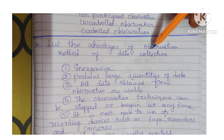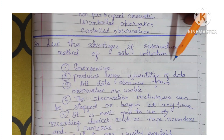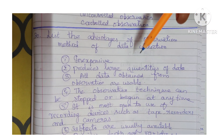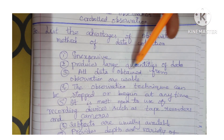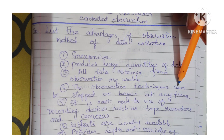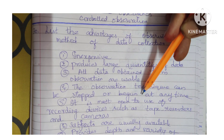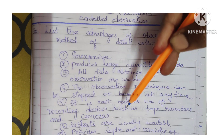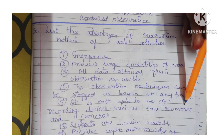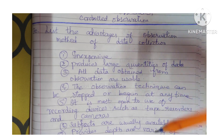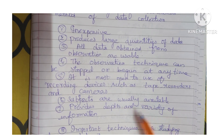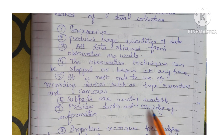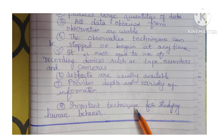Question 30: List the advantages of observation method of data collection. It is inexpensive and produces large quantities of data. All data obtained from observation are usable. The observation technique can be stopped or begun at any time. It is open to use of recording devices such as tape recorders and cameras. Subjects are usually available, and it provides depth and variety of information. It is an important technique for studying human behavior.